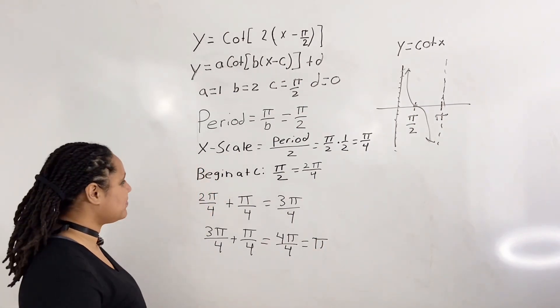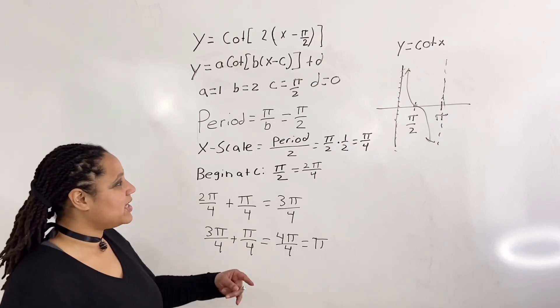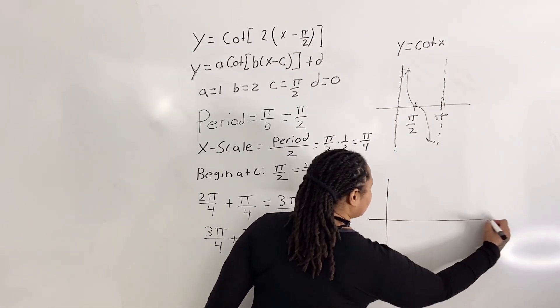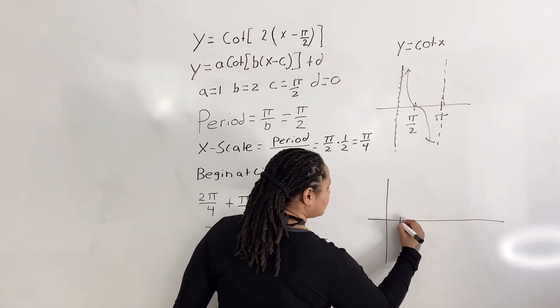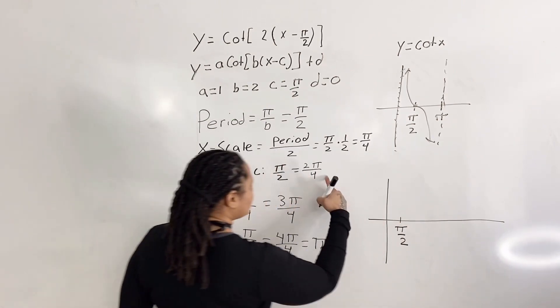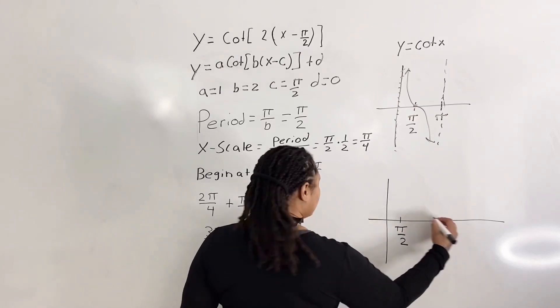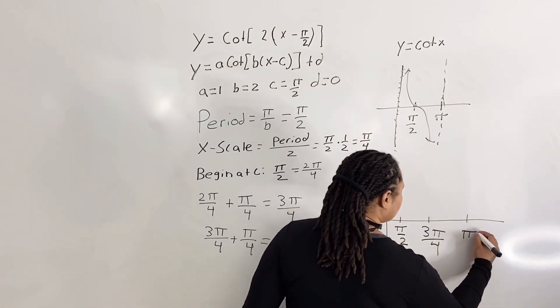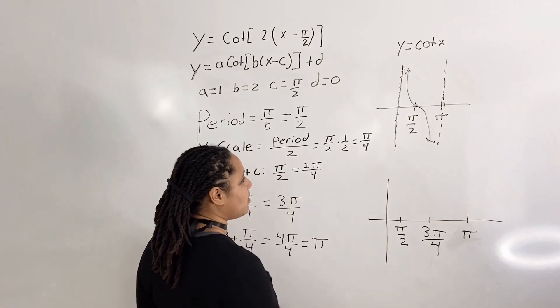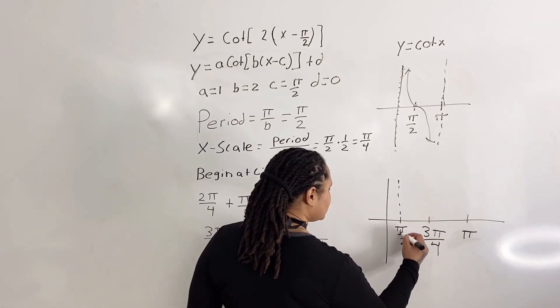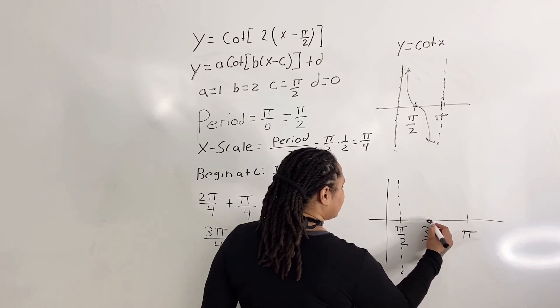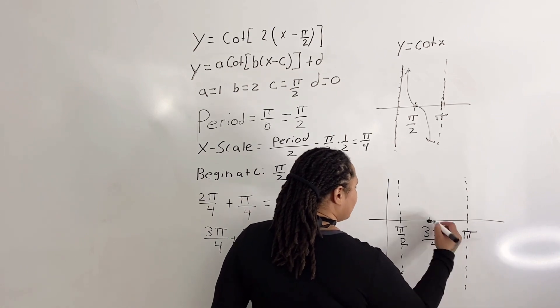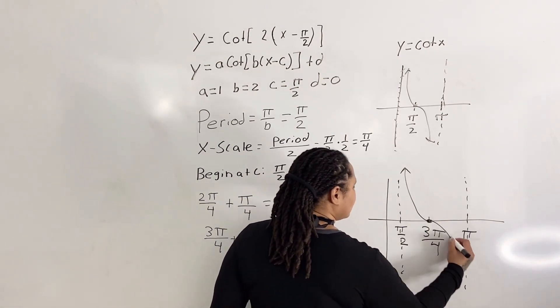So now that is enough computation for our x-scale. So how about we draw our new graph? We're going to begin at c, which is pi over 2. And our next increment over is 3 pi over 4. And our next increment over is at pi. And what we're going to do is we're just going to model our original graph. So we have an asymptote at pi over 2, we have an x-intercept at 3 pi over 4, and we have another asymptote at pi. And we're just going to swing our graph out like that.